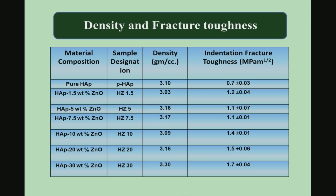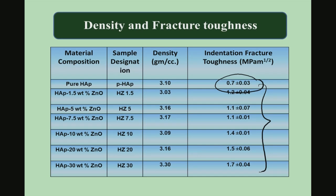Hydroxyapatite-zinc oxide composites have reasonably good density since these are conventionally sintered materials — not even spark plasma sintered — and could be sintered in air at around 1200°C. As for fracture toughness, pure hydroxyapatite has a fracture toughness of 0.7 MPa√m, and as zinc oxide content increases, fracture toughness increases to a reasonable extent of about 1.5 to 1.7 MPa√m.